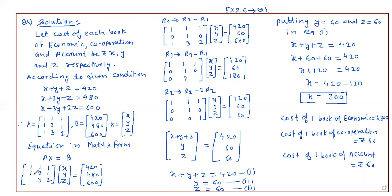We have to do R2 minus R1. R1 will be the same, R3 will be the same, and only R2 will change. So: 1 minus 1 is 0, 2 minus 1 is 1, 1 minus 1 is 0, and 480 minus 420 is 60.